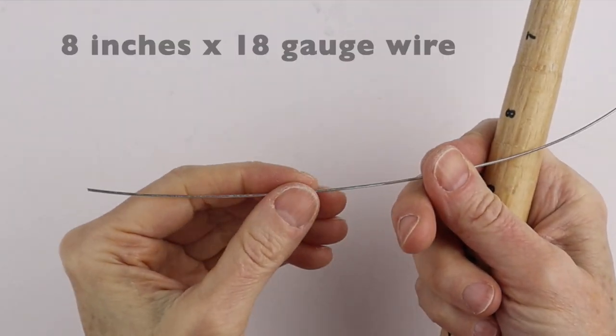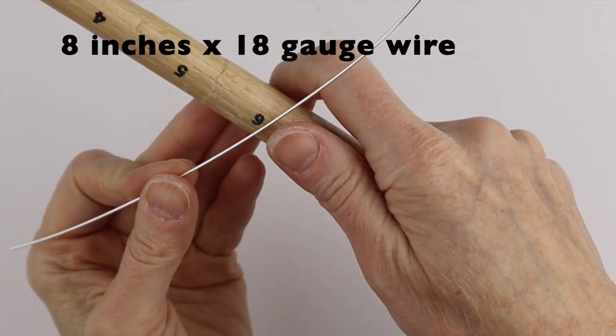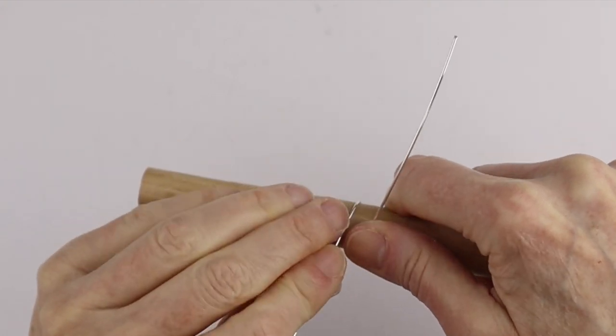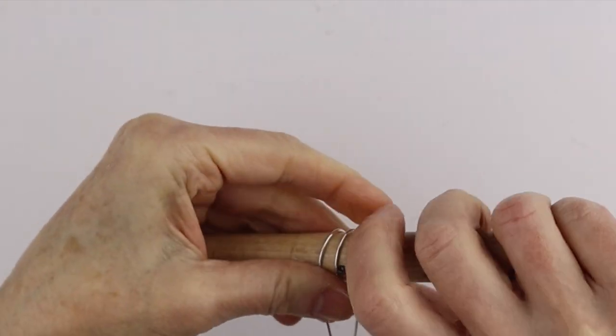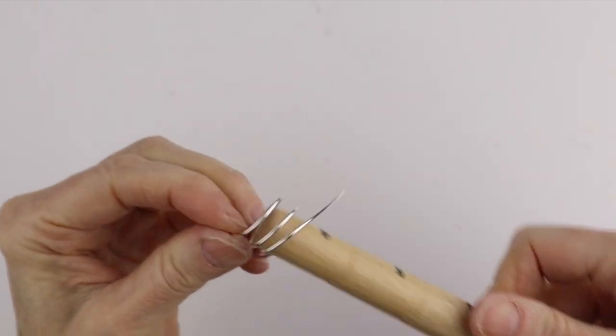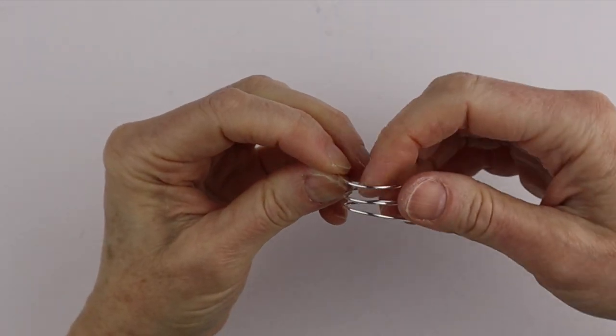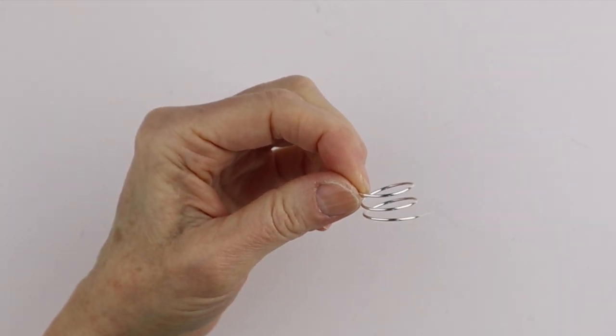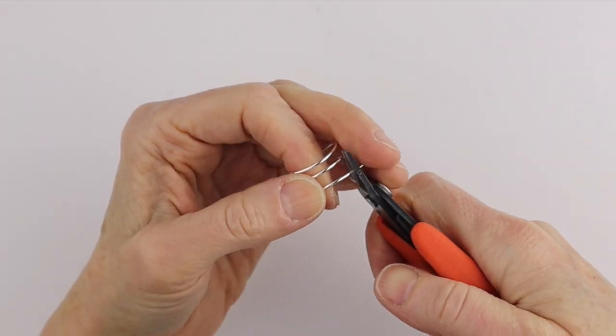So I'm going to start with 18 gauge wire and I'm just going to wind it around a couple of times for the ring base. You'll need about 6 to 8 inches depending on how big your finger is. We can just clip this one here.